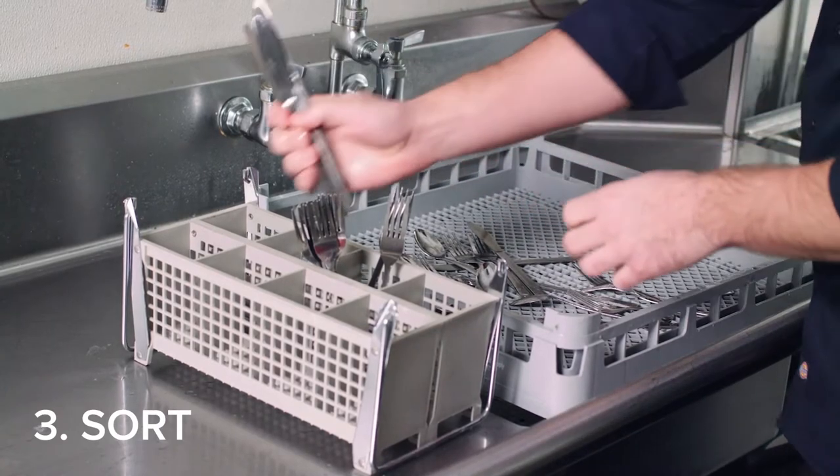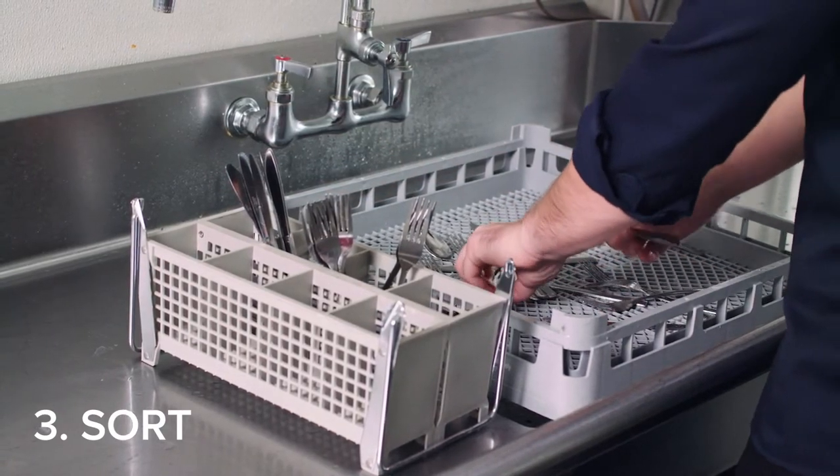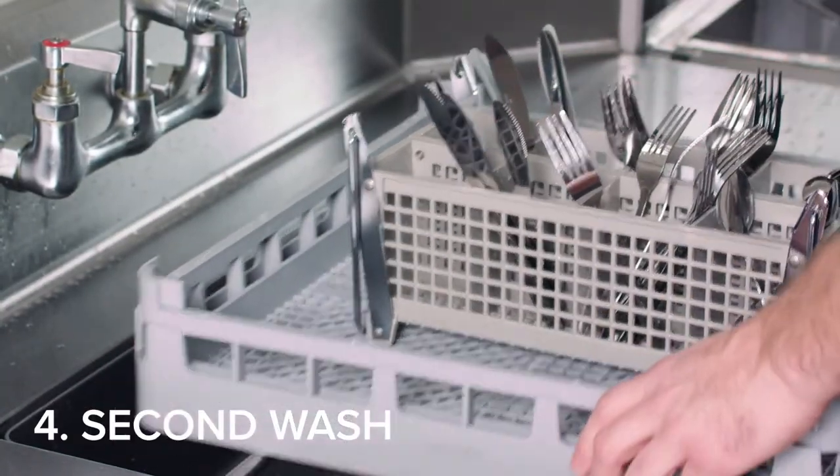When the cycle is complete, sort the utensils into a basket, handles down, and then wash a second time.